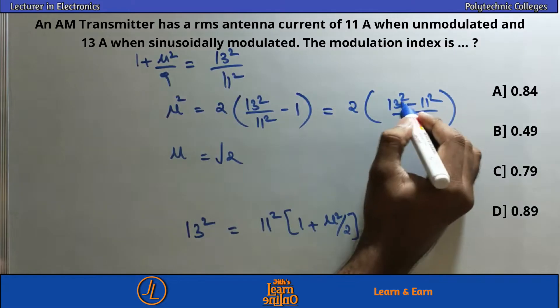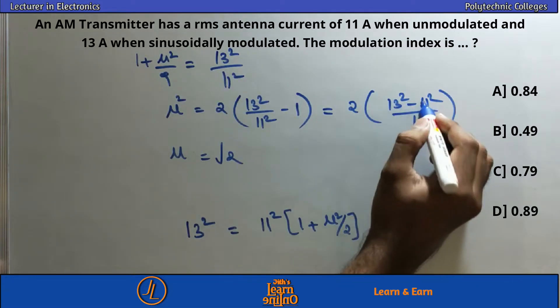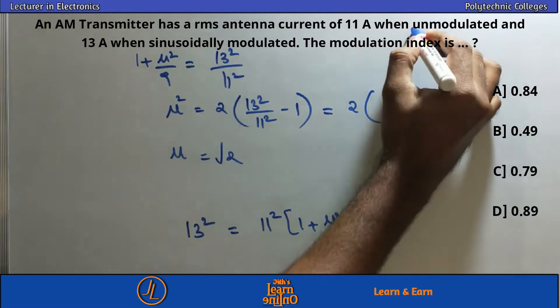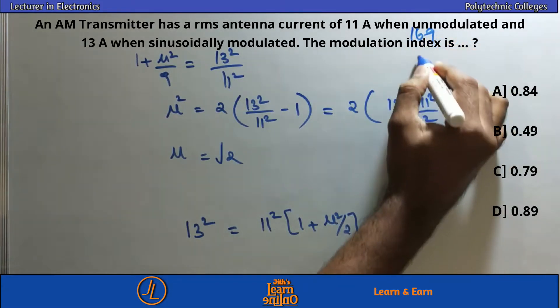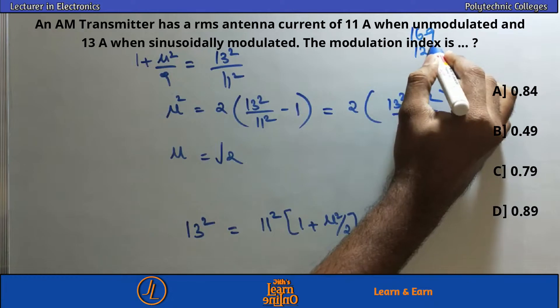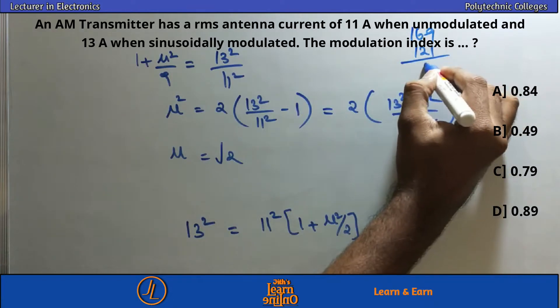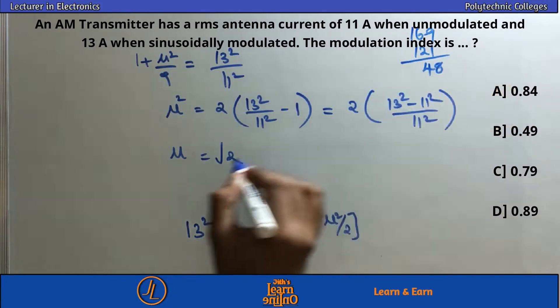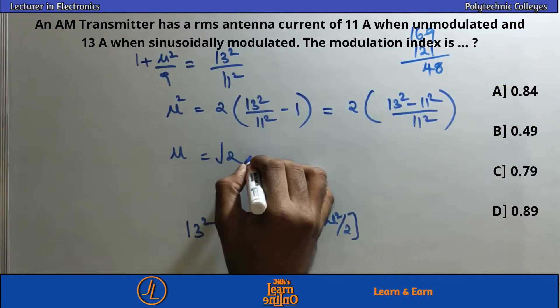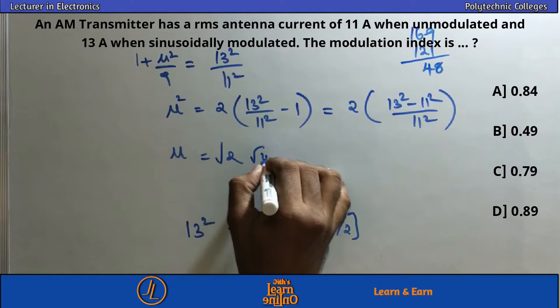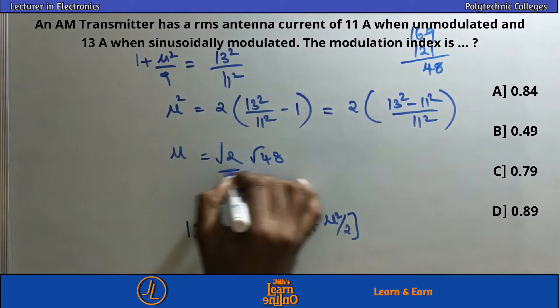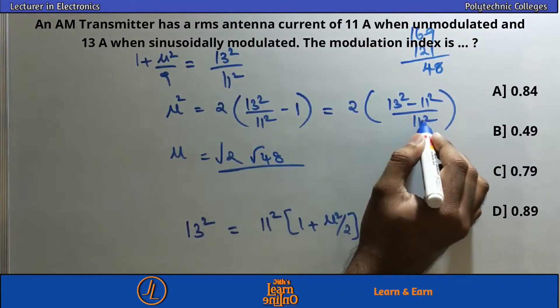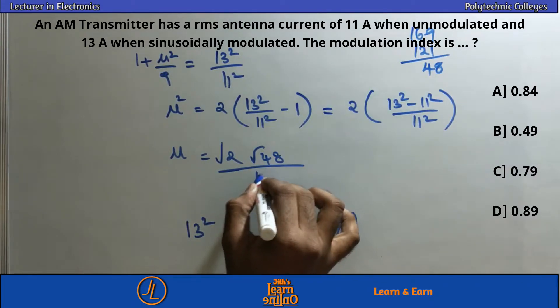Taking the square root: μ = √(2 × 48 / 121). Simplifying: √96 / 11. This gives approximately 0.89. So the modulation index is 0.89, which corresponds to answer option D.